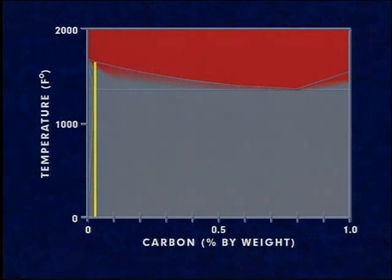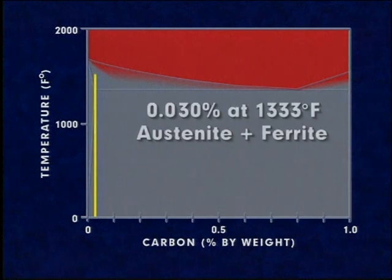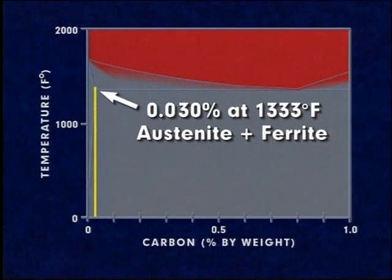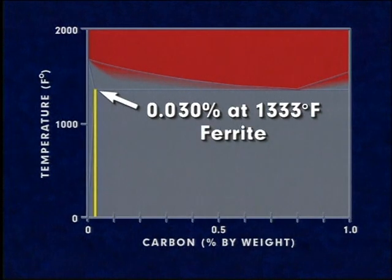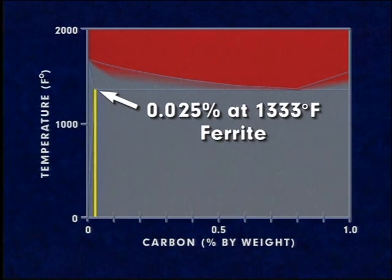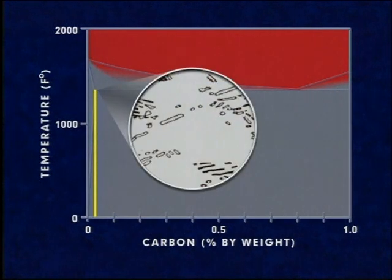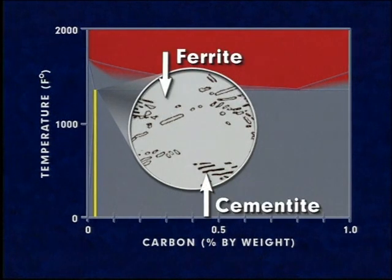As cooling continues, more and more ferrite is formed, until at 1,333 degrees Fahrenheit the remaining austenite transforms completely. Ferrite can retain only 0.025 percent carbon at this temperature. So to accommodate the carbon in excess of this amount, the remaining austenite transforms to a mixture of ferrite and cementite in alternating thin, plate-like layers.